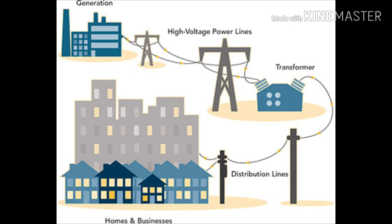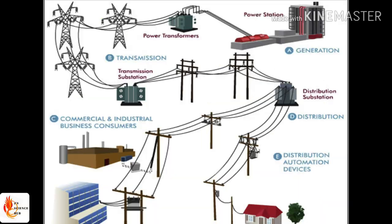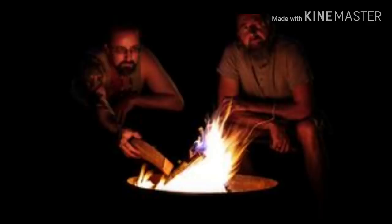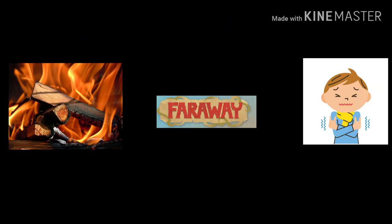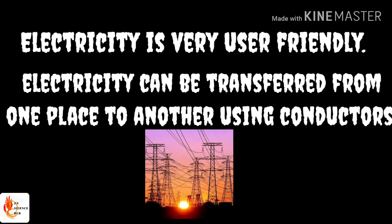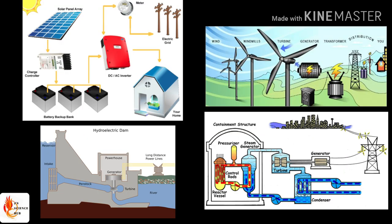Another important reason why we use electricity in abundance is that we can transfer it easily using conductors — from one place to another. For example, if you use biomass to produce heat, you can't carry that heat energy to a different place. But if you generate electricity in one place, you can transfer it easily via conductors. These are the two main reasons why we use electricity abundantly in our day-to-day activities.